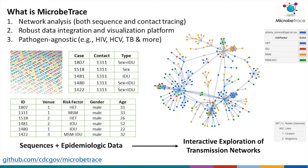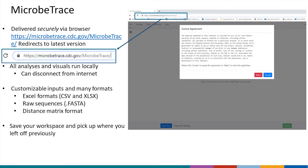In addition to line lists, we'll also collect contact tracing data or partner services data that are collected during an outbreak. This is represented in the format of: the case has a contact, and there's some type of contact between them — like sex, or sex and injection drug use. This is represented as person A is connected to person B by some type of contact. So MicrobeTrace is meant to visualize these datasets.